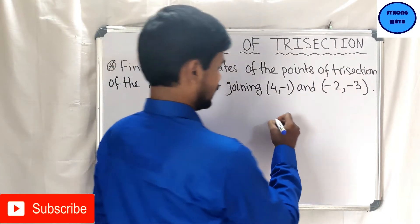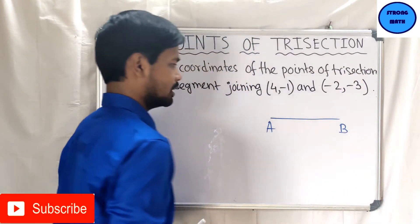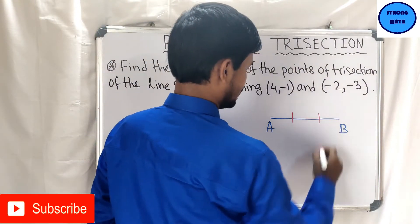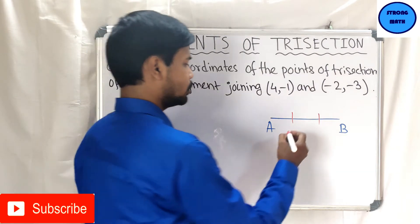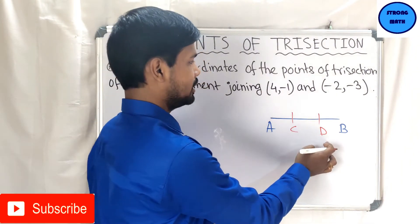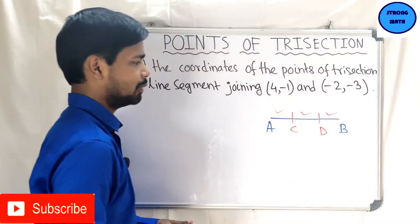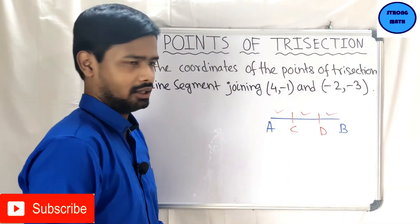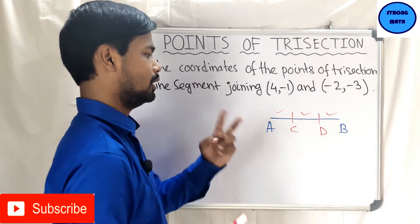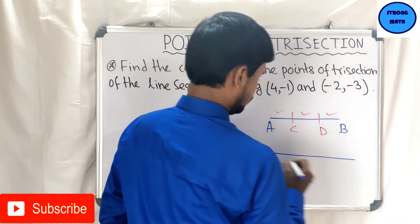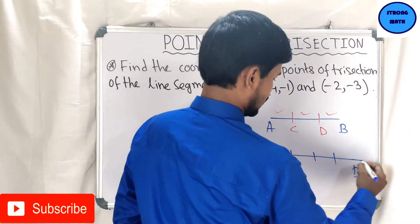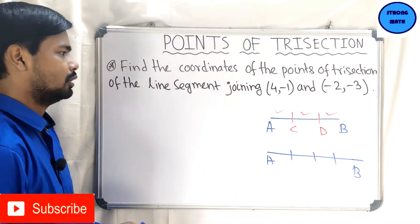First, let's understand points of trisections. Suppose AB is any line segment joining points A and B. If this line segment is divided into three equal parts using two points C and D, we need to find the coordinates of C and D. For trisection of any line segment we need two points; similarly, for four equal parts we need three points.